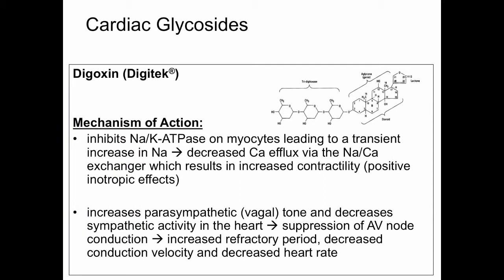Our first class of agents is the cardiac glycosides, with digoxin as our prototype. Digoxin acts on the sodium-potassium ATPase on cardiac myocytes, inhibiting it and leading to a transient increase in intracellular sodium, which in turn decreases calcium efflux via the sodium-calcium exchanger, resulting in increased contractility — a positive inotropic effect. Digoxin also increases parasympathetic or vagal tone and decreases sympathetic activity, leading to suppression of AV node conduction, increased refractory period, decreased conduction velocity, and decreased heart rate. Taken together, digoxin reduces symptoms, increases exercise tolerance, and reduces hospitalizations, but importantly does not prolong life.